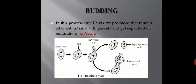The next type of asexual reproduction is budding. Budding is generally seen in the case of yeast or hydra. In this process, a small bud is produced on the parent organism and initially it remains attached to the parent. Later on, it gets separated and forms a separate individual.